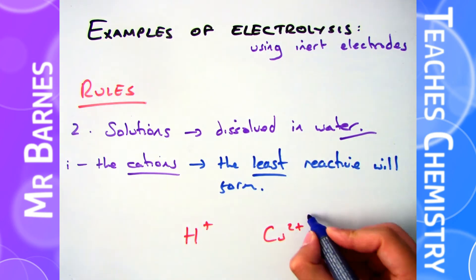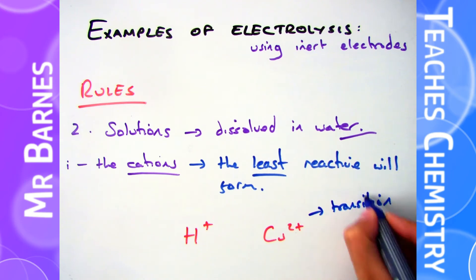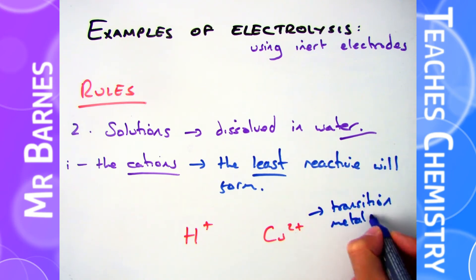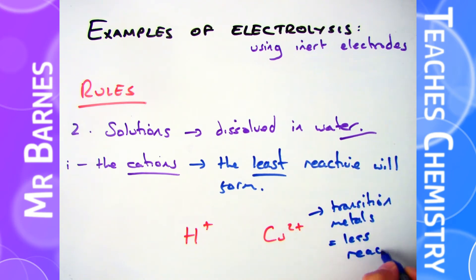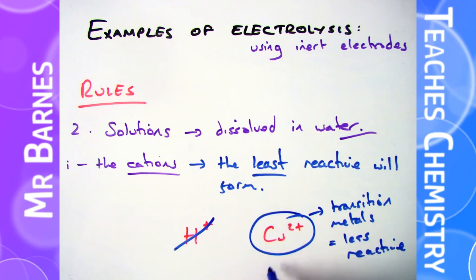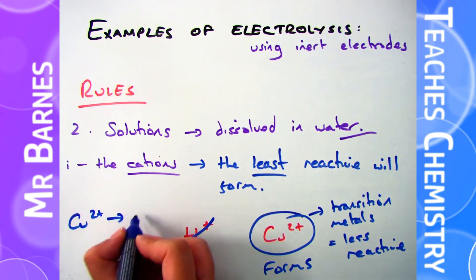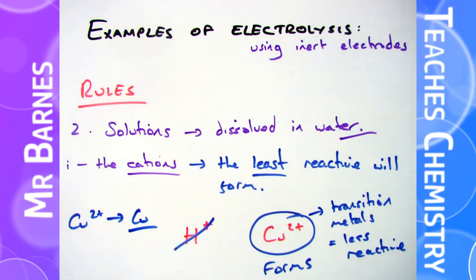If you have something from the transition metals - for example copper Cu2+ - that is always going to be less reactive. So anything in the transition metals is less reactive than hydrogen, therefore that is the thing that will be formed at the electrode.